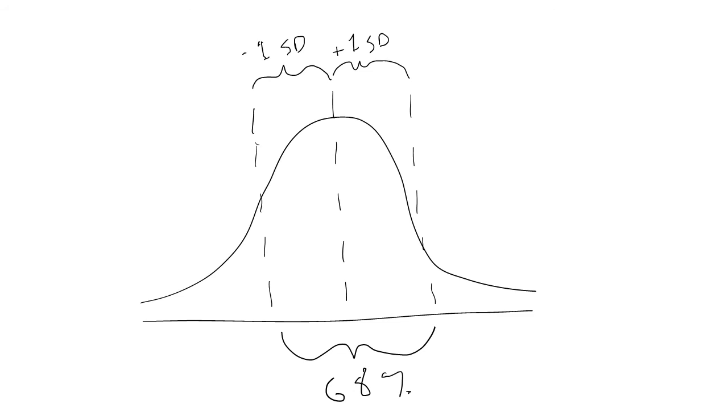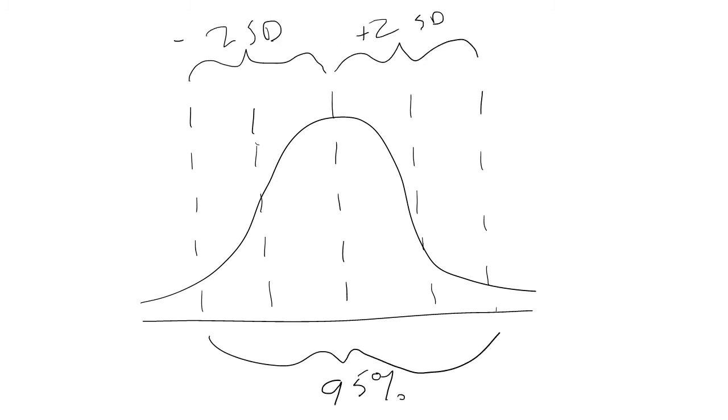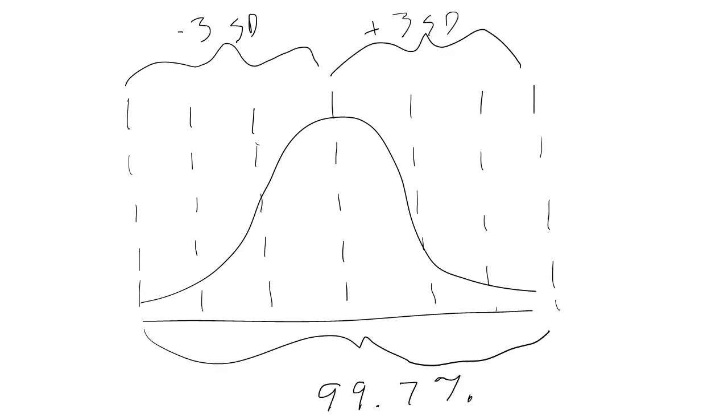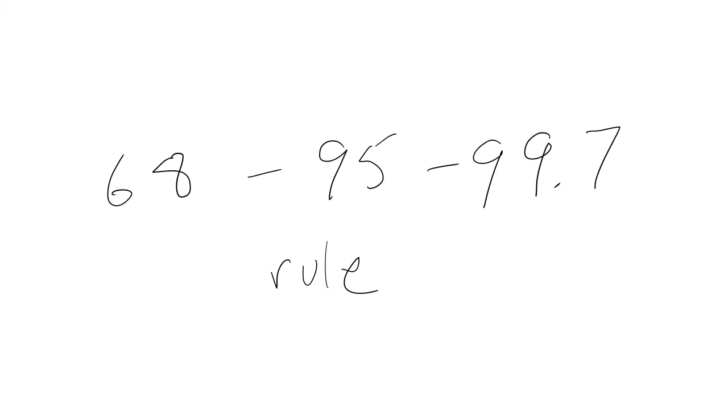We also know that if our variable is normally distributed, about 68% of our distribution falls in a range from minus one standard deviation to plus one standard deviation. Approximately 95% of our distribution falls within 2 standard deviations around our mean, and approximately 99.7% of our distribution falls within 3 standard deviations of our mean. This is known as the 68-95-99.7 rule.